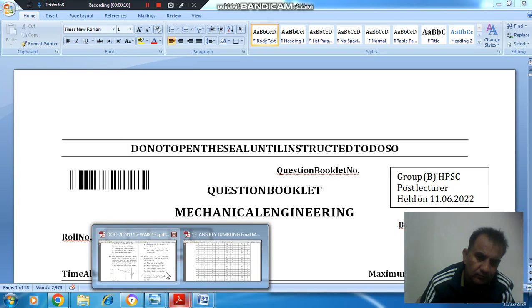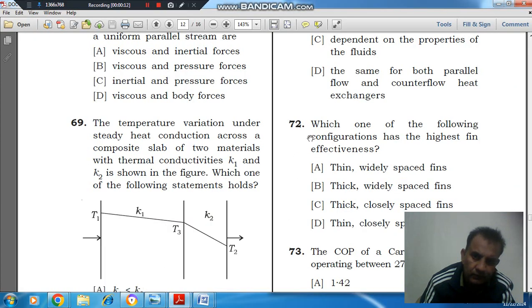Question number 72 is: which one of the following configurations has the highest fin effectiveness? Option A, thin widely spaced fins. Option B, thick widely spaced fins.